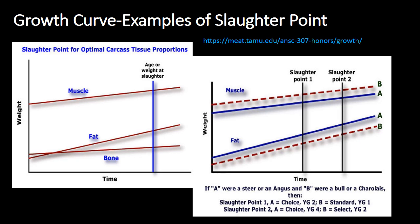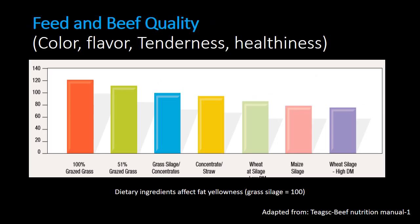There are eight beef grades in the USA, based on two main criteria: intramuscular fat or degree of marbling, and maturity or estimated age of the animal at slaughter. The eight grades are: (1) Prime, (2) Choice, (3) Select (previously known as Good), (4) Standard, (5) Commercial, (6) Utility, (7) Cutter, and (8) Canner. Standard and commercial are lower quality grades, while select is the lowest grade commonly sold at retail — acceptable quality but less juicy and tender due to leanness.